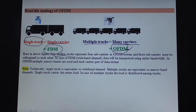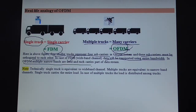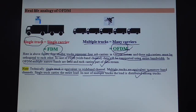In the truck analogy, four smaller trucks represent four sub-carriers in an OFDM system, and these sub-carriers must be orthogonal to each other. In FDM, data is transported using the entire bandwidth of the channel. In OFDM, multiple narrow-band channels are used and each carries a part of the input data stream. A single truck is equivalent to a wide-band channel, while multiple trucks are equivalent to narrow-band channels. In the single-truck case, the entire load is carried by one carrier; with multiple trucks, the load is distributed.